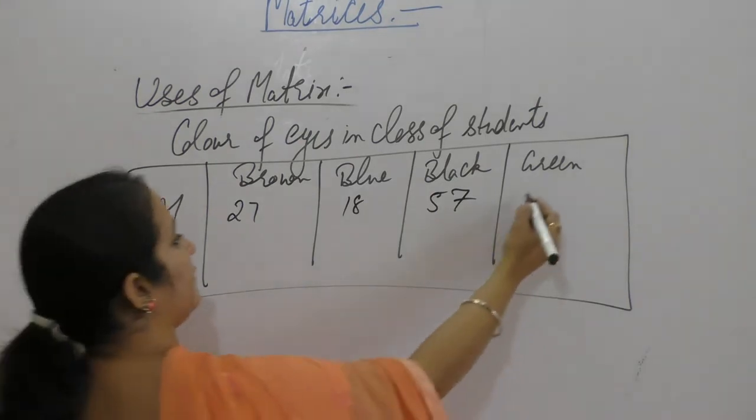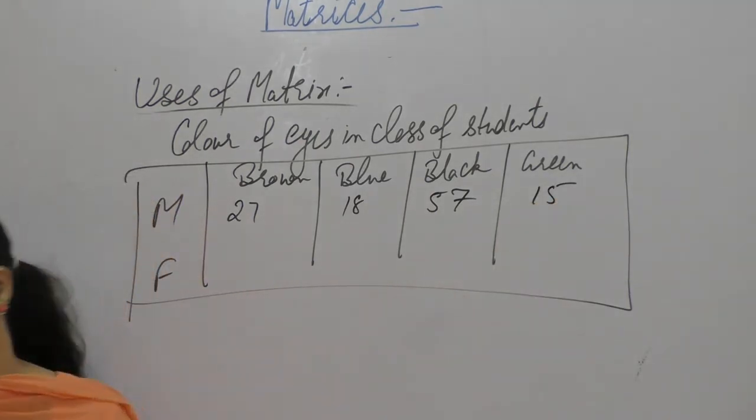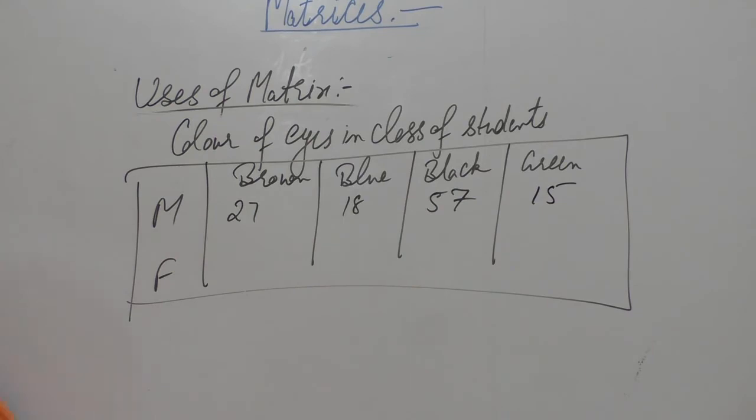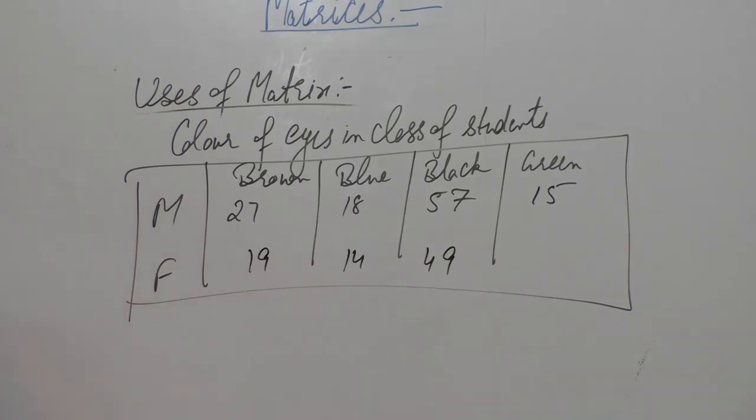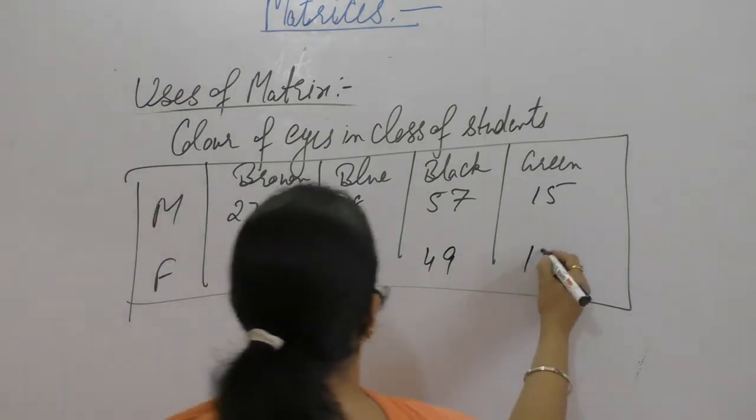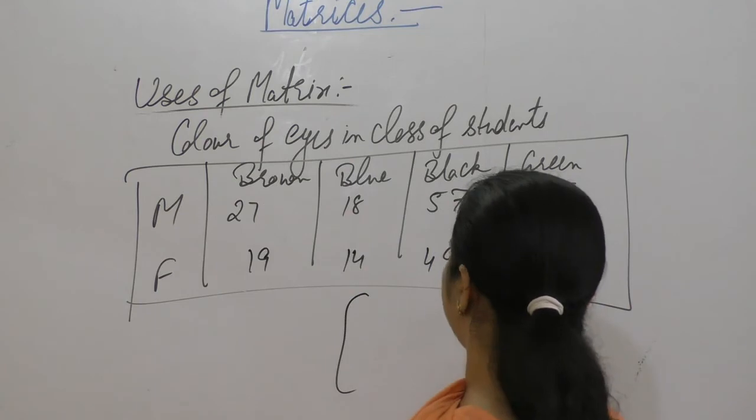27, 18, 57, 15, 19, 14, 49 and 13. We can represent this as a matrix.